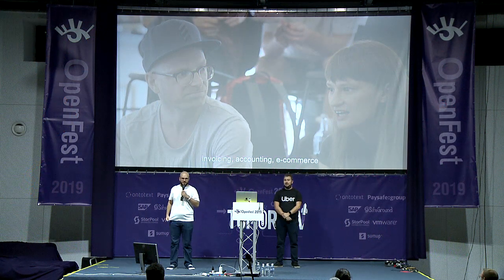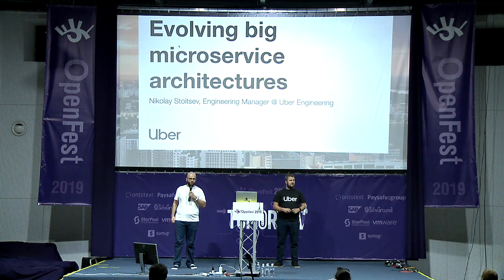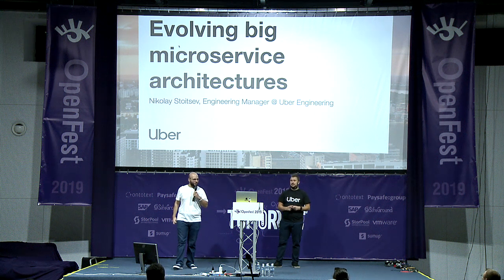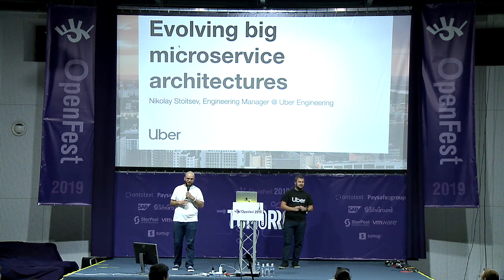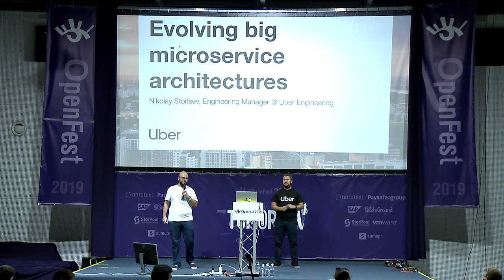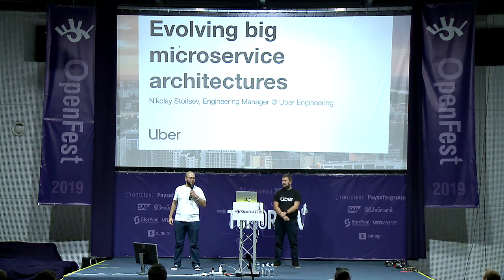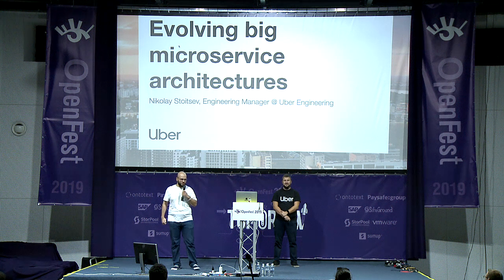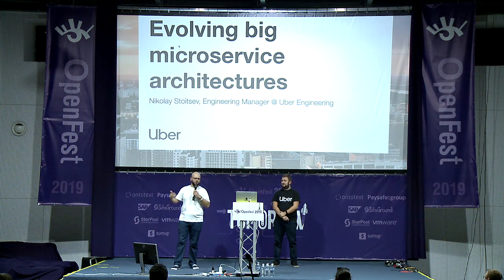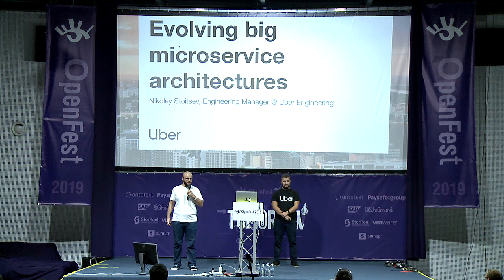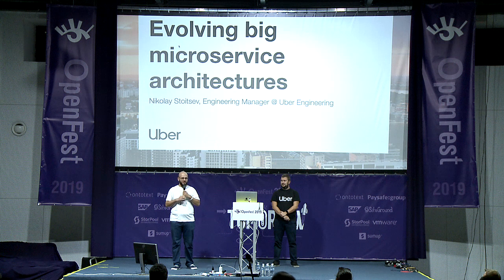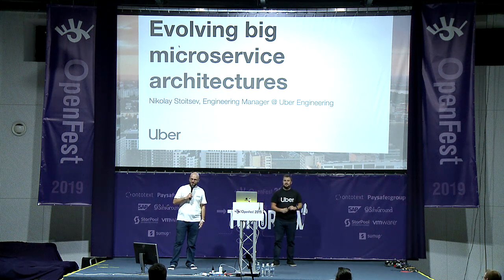We are ready to start with the next presentation in our main hall. I hope you guys still have some energy for some deep and complicated stuff, because that's exactly what our next presenter is going to talk about. It's about evolving microservice architecture, especially when you have a lot of them and you need to scale out across the board, vertically and horizontally. Telling you about this complicated map is Nikolai Stuitsev, an engineering manager from Uber. Please give him a round of applause.